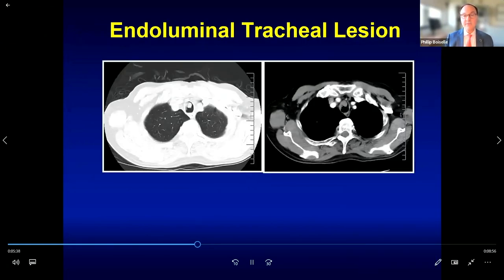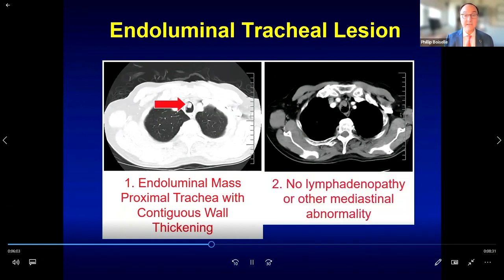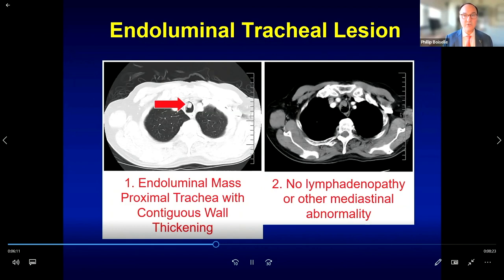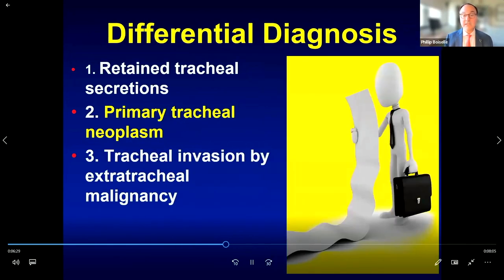Look carefully at the tracheal lumen for any endoluminal lesions. In this case there is an irregularly marginated polypoid lesion arising from the right anterolateral wall with associated wall thickening. Findings include an endoluminal mass with no associated mediastinal lymphadenopathy and no contiguous enlargement of adjacent thoracic structures such as the thyroid or esophagus. This is a primary tracheal neoplasm — the majority are malignant in adults; this was a squamous cell carcinoma associated with cigarette smoking.